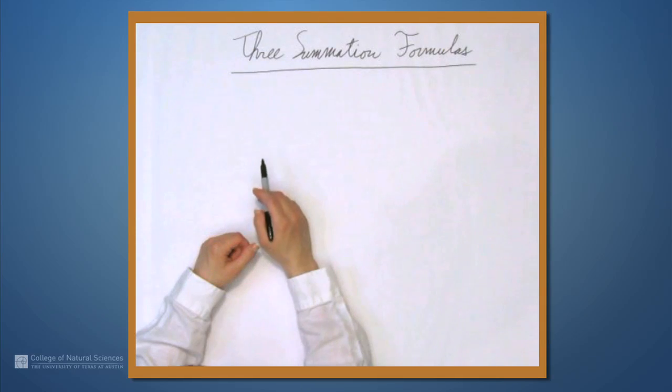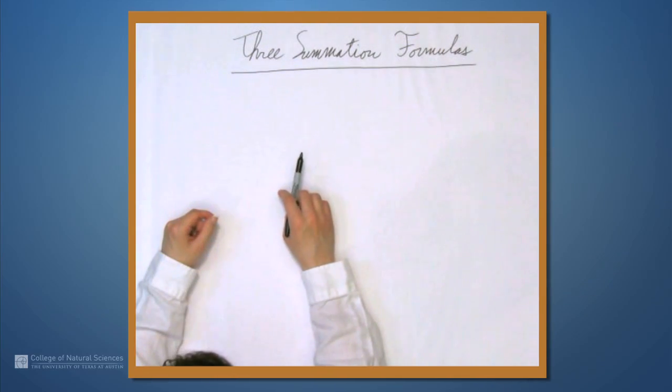We're here at the example table, and in this video we're going to talk about three summation formulas. These are formulas that are going to come up very often when you're computing Riemann sums.